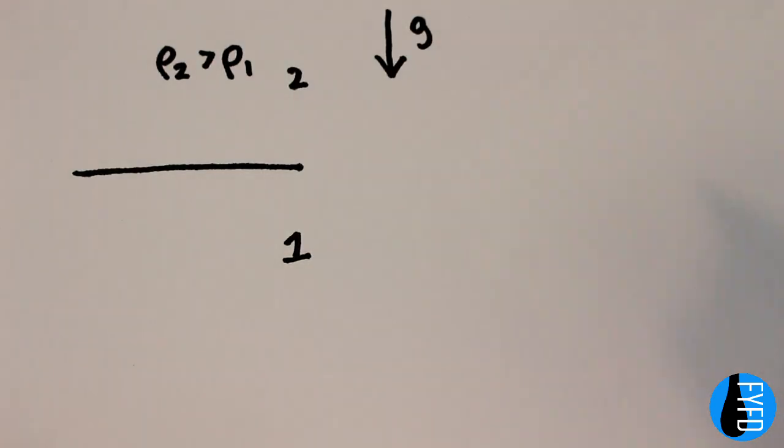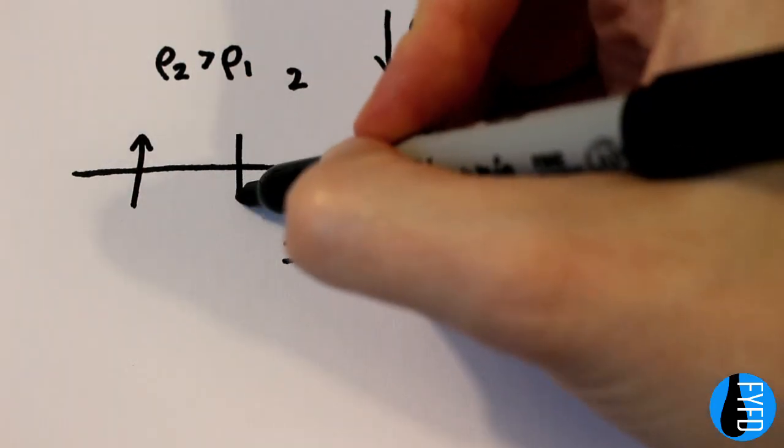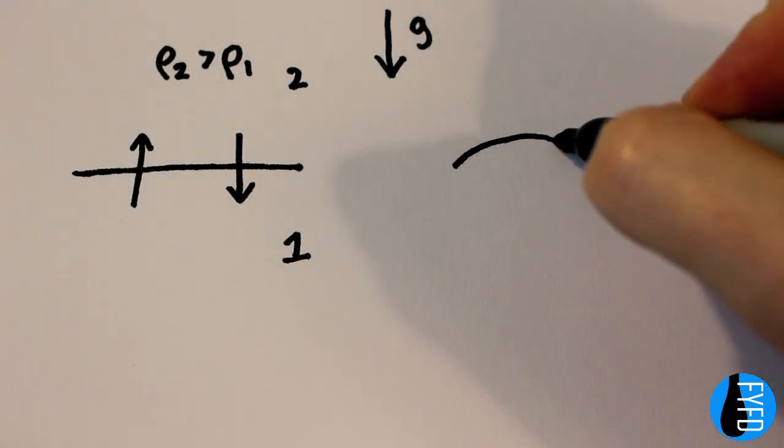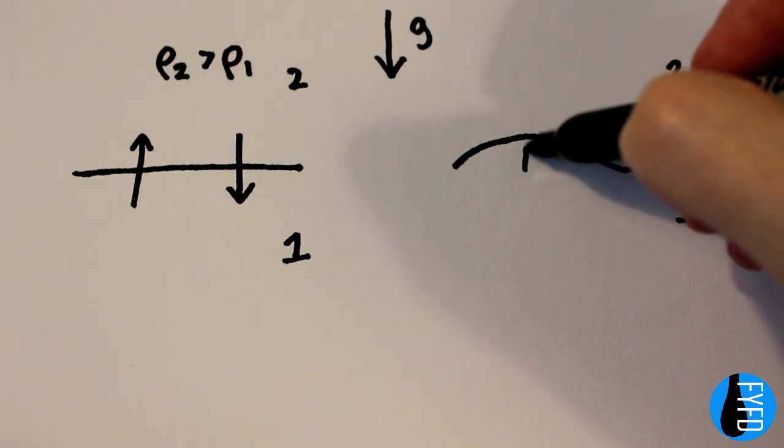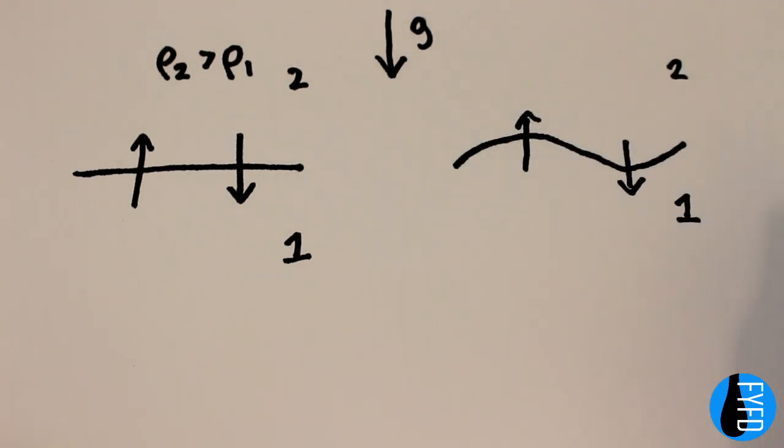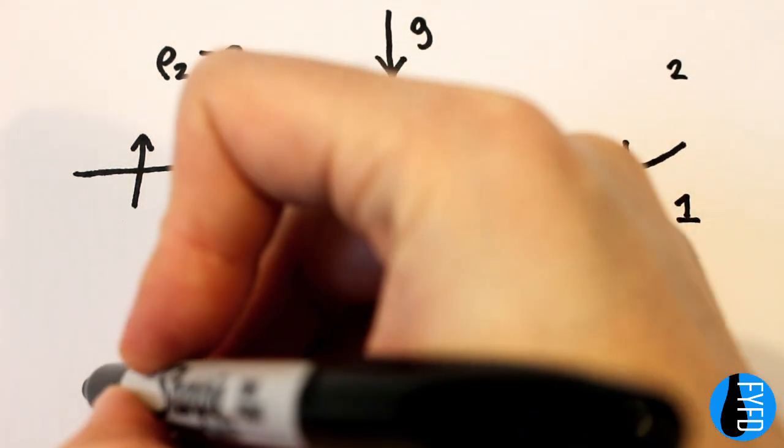But say we switch them so the upper fluid is denser and heavier than the lower one. The lighter fluid is going to rise while the heavier fluid sinks. This interface between the two fluids is going to get distorted, and because the heavy fluid will keep trying to sink while the lighter fluid rises, the interface is only going to get more and more distorted as time goes on.